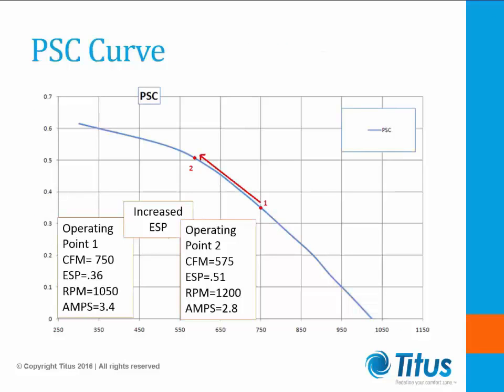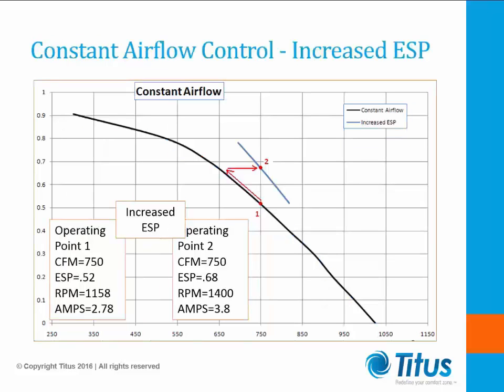Now let's look at a standard PSC fan curve. As the system pressure goes up, airflow decreases, but we can also see that the fan energy draw also goes down. If we compare it to an ECM programmed to provide constant airflow, we see that as the pressure drop goes up, the fan increases its power, shifting curves to maintain airflow, but so does the energy draw. For reasons of energy conservation, it is suggested to provide an ECM programmed for constant torque.